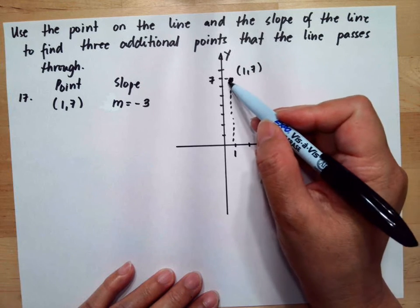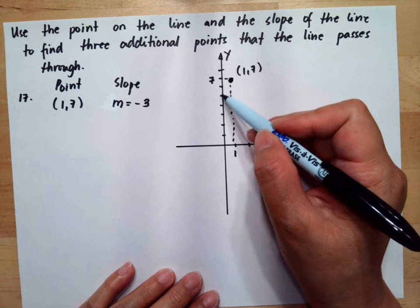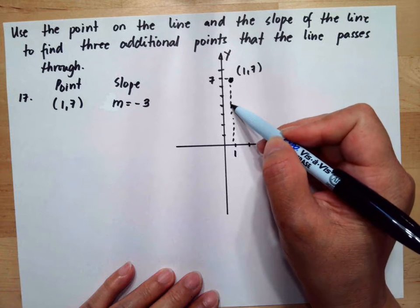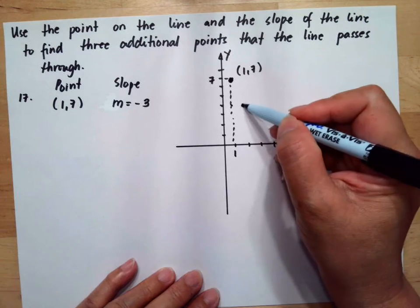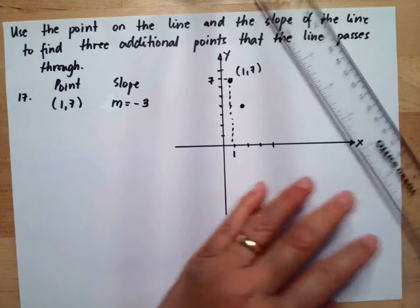Then the slope is you go down three steps, 1, 2, 3, so this is the point, then you go to the right one step. So this is our slope.